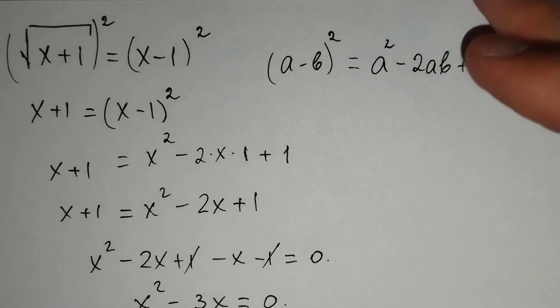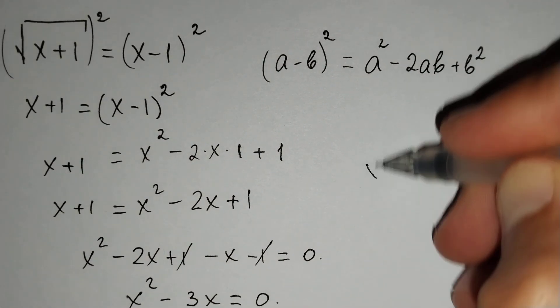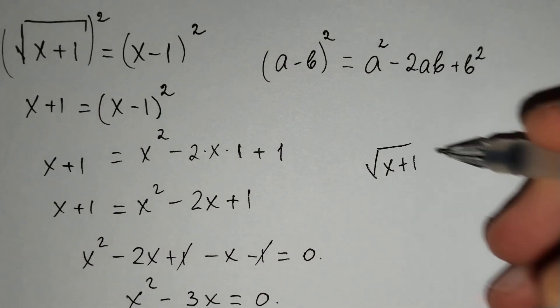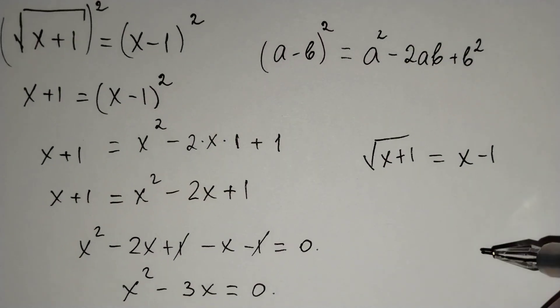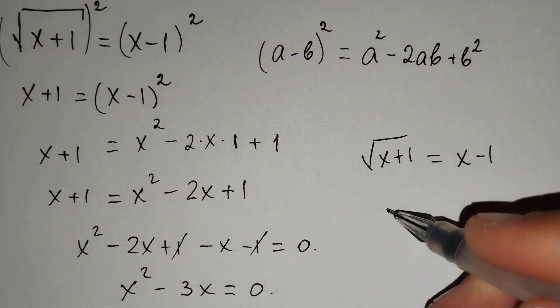Firstly, 0. We know that square root of x plus 1 should equal x minus 1. Firstly, for 0,